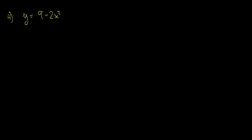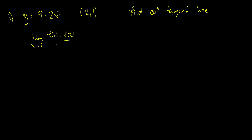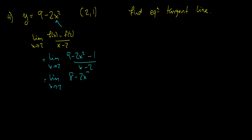We have y = 9 − 2x² and we're given the point (2, 1), and we want to find the equation of the tangent line. First we find the slope by taking the limit as x approaches 2 of [f(x) − f(2)] over (x − 2). f(2) equals 9 minus 2 times 4, which is 9 minus 8, equal to one. So we subtract one over (x − 2). Simplifying gives (8 − 2x²) over (x − 2).